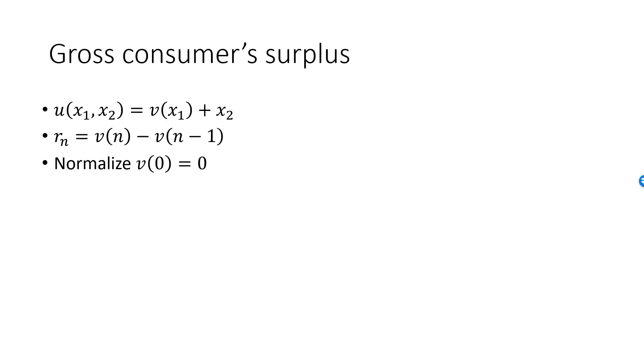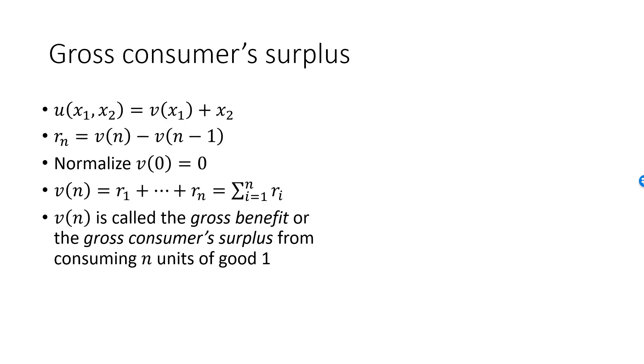We can keep doing this, giving us v of n equal to r1 plus r2 and so on up to rn. Using the summation sign, v of n is the sum where i goes from 1 to n of r i. Now, v is only a part of the utility function, but it is the important part in determining the utility that we get from consuming good 1. v of 1 is therefore called the gross benefit or the gross consumer surplus of consuming 1 unit of good 1.